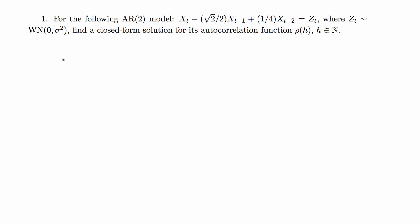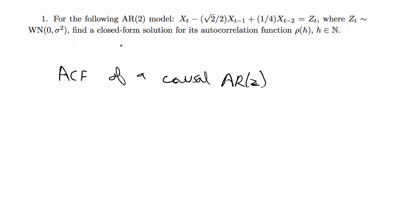For these types of problems we're asked to find the ACF, or autocorrelation function, of a causal AR2. This is a special type of problem because it has a nice closed form formula, but the formula is one of three cases. There are basically two steps for this type of problem.